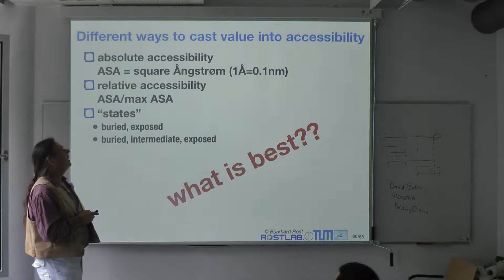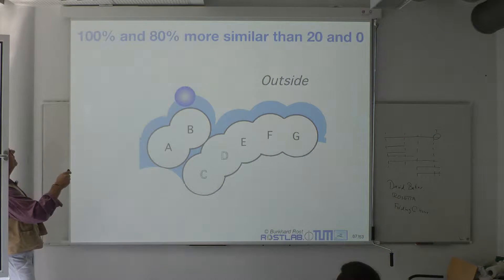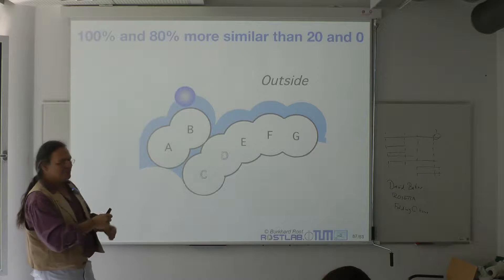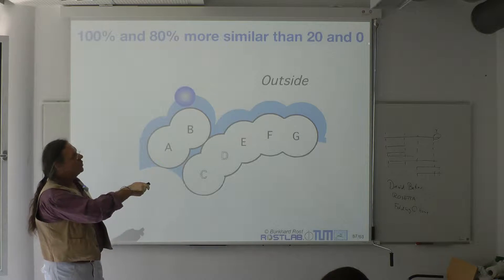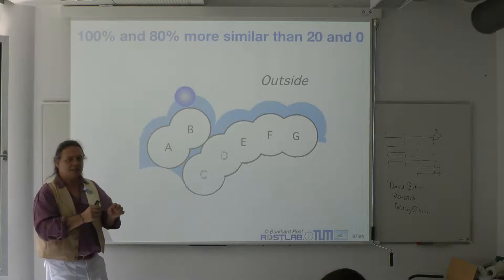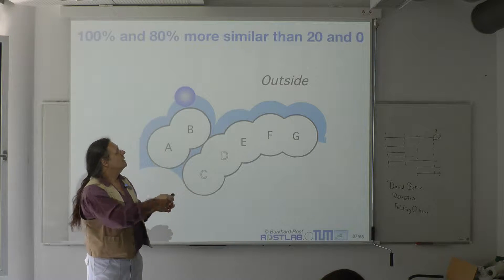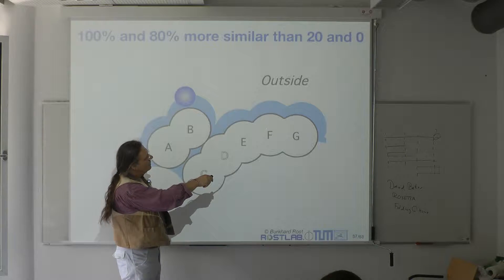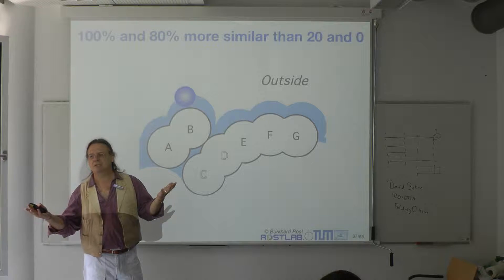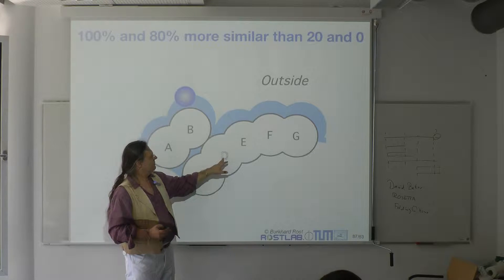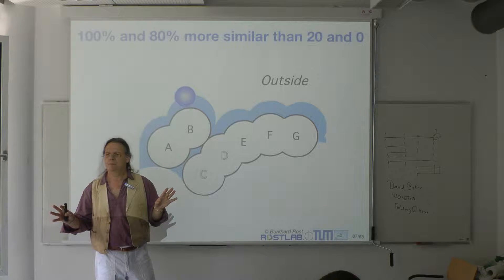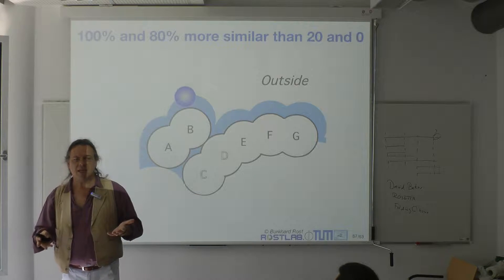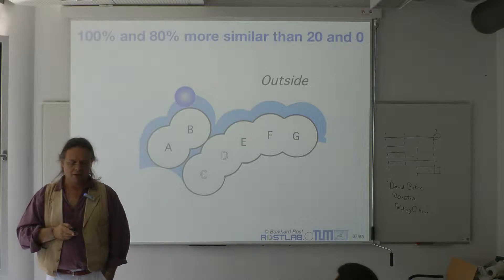Here comes an additional problem. With a percentage value, 100% exposed and 80% exposed are much more similar to each other than 20% and 0%. The reason is that 100% and 80% are essentially both accessible, while 0% is completely buried and 20% is only marginally accessible. In this image, whether you are F or G doesn't make a big difference, but C versus E — possibly even versus D — that does make a difference, although the actual numerical gap of 20 units is the same in both cases. They don't mean the same. So somehow we have to model that nonlinearity into the system of prediction.